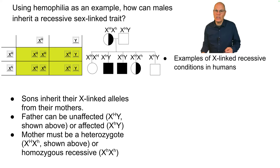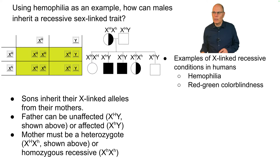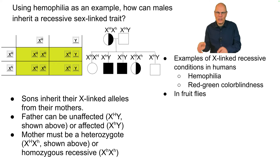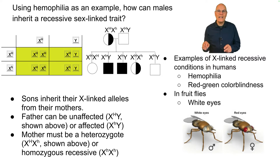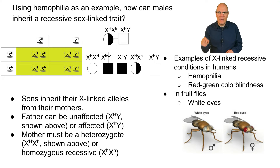Examples of X-linked recessive conditions in humans include hemophilia, which we just talked about, and red-green colorblindness. In fruit flies, which have a similar sex determination system to humans — just X and Y chromosomes, like mammals — the allele for white eyes is a mutation on the X chromosome. In fact, this was the first allele ever located on a specific chromosome.